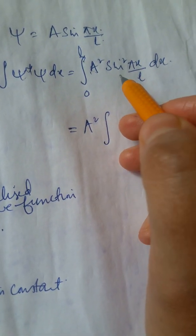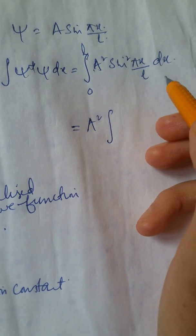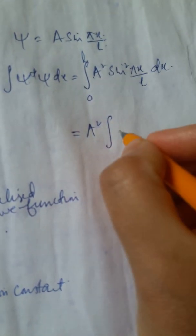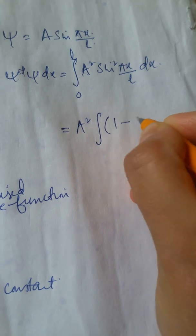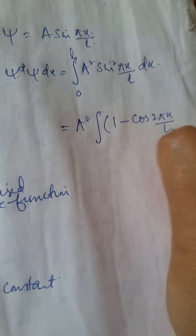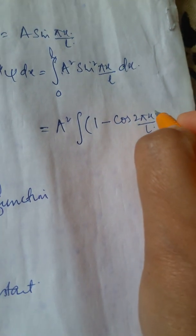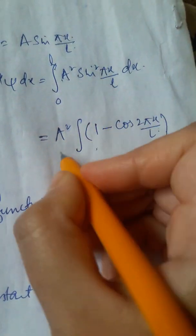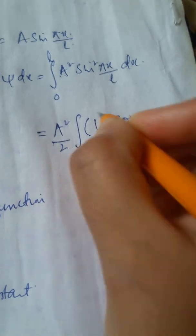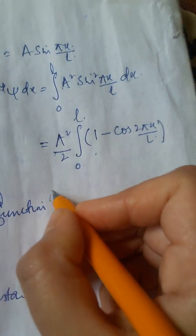This will be equal to A²∫... For sin² I will use the identity that 2 sin²θ = 1 - cos(2θ). So, a factor of 2 will come out, integration is from 0 to L.